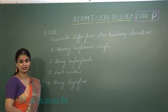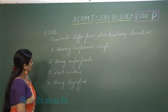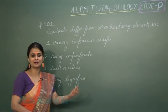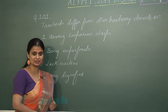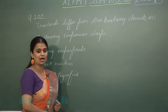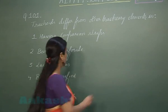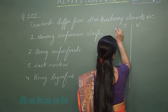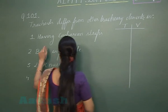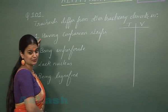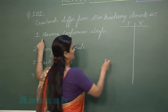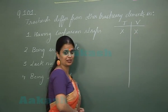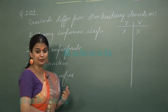Let's discuss question number 101. Tracheids differ from other trachea elements — here other trachea elements means we have to consider the vessel. T is representing tracheids and V represents vessel. Looking at the first option — having Casparian strips — Casparian strips are absent in both tracheids and vessels; they are present in endodermis.